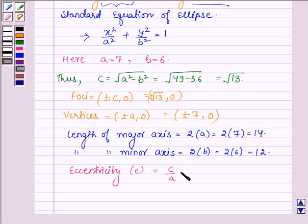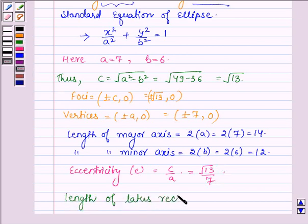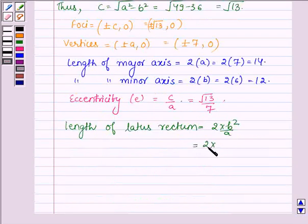The length of the latus rectum, which is given by 2b²/a, equals 2 times 36/7 = 72/7.